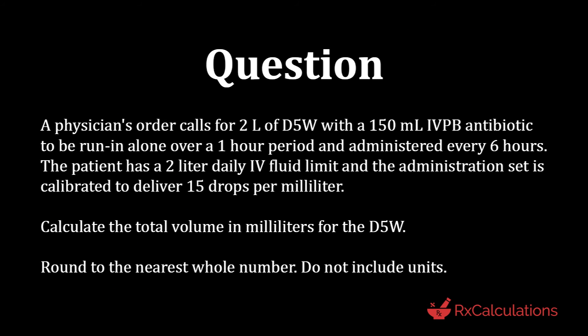This question says a physician's order calls for 2 liters of D5W with a 150-milliliter IV piggyback antibiotic to be run in alone over a 1-hour period and administered every 6 hours. The patient has a 2-liter daily IV fluid limit, and the administration set is calibrated to deliver 15 drops per milliliter. Calculate the total volume in milliliters for the D5W. Round to the nearest whole number; do not include units.